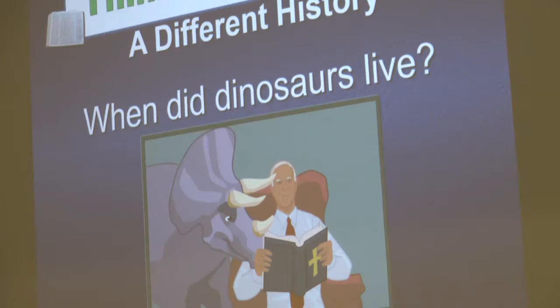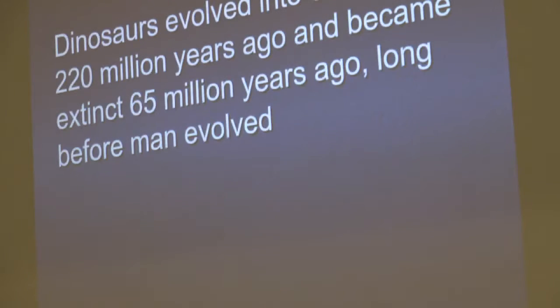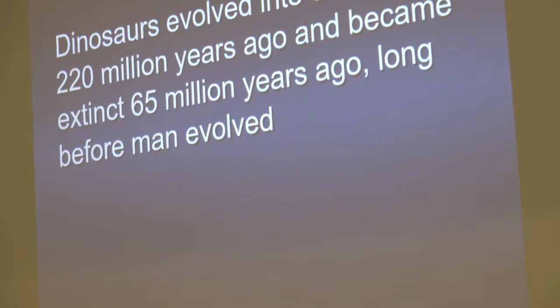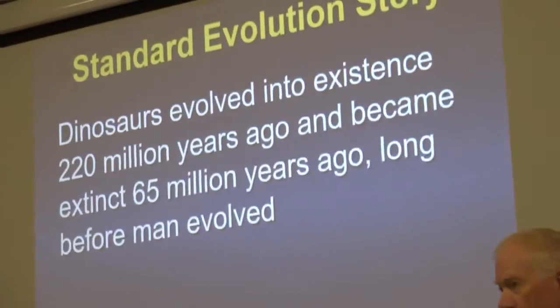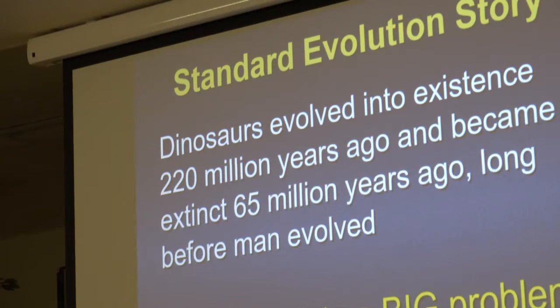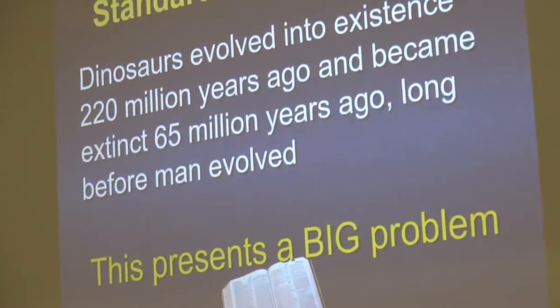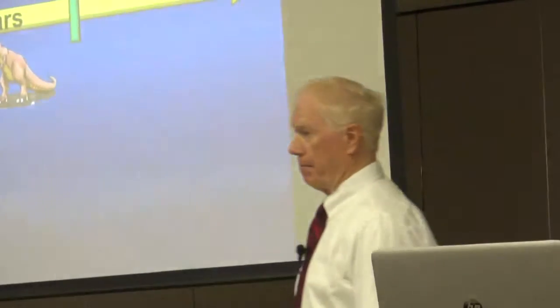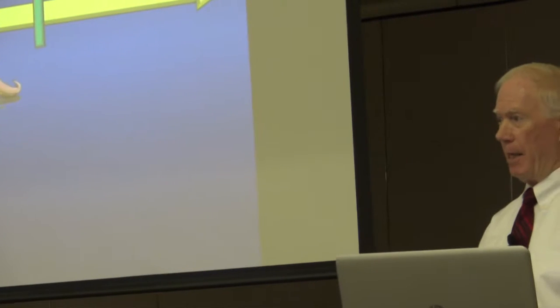When did dinosaurs live? The standard story is dinosaurs evolved into existence about 220 million years ago and died out about 65 million years ago, long before man evolved. Well, if you're believing that, we're going to have a real bad time with the gospel. If we're going to have millions of years in the Bible, what would have been going on for those millions of years before Adam and Eve? Millions of years of death, pain, and disease — that's what the fossil record is. It's a record of dead things.